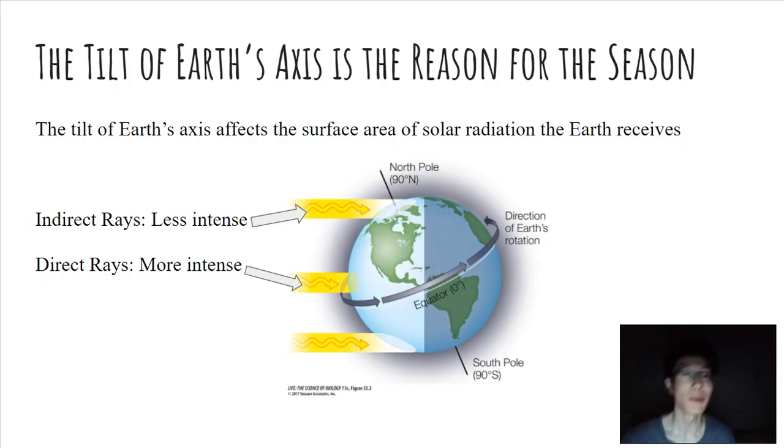Okay, so first of all let's establish the fact that it's the tilt of the earth's axis that causes varied seasons. That's something that you probably would know at this point, but the tilt of the axis affects the surface area of solar radiation that the earth receives.